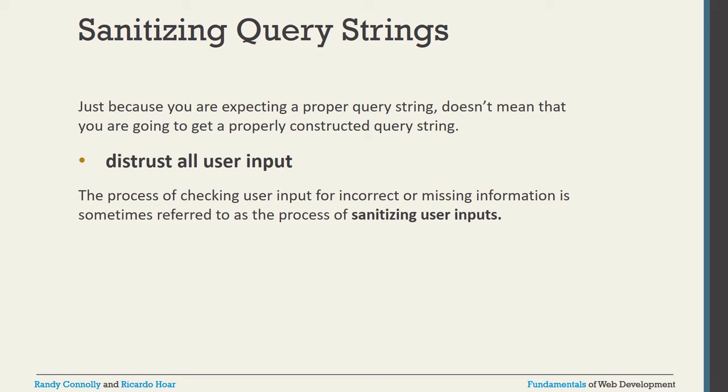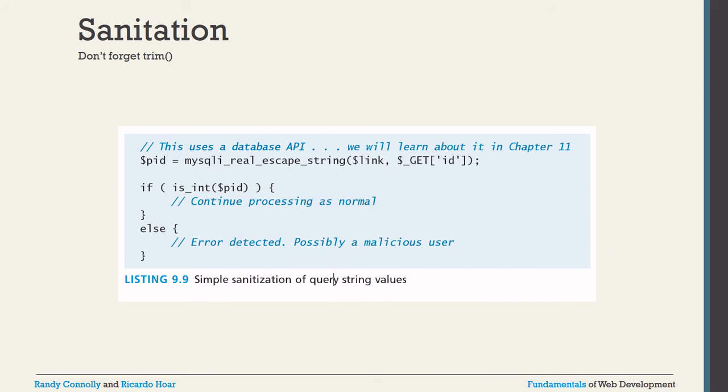Sometimes you need to validate user input for incorrect or missing information — this is called sanitizing user input. An important function is mysqli_real_escape_string($link, $value), which handles special characters from user input safely. $link is the database connection variable, which will be covered in the next video. Similarly, intval() processes a value as an integer; if it fails, an error can be displayed to prevent attacks or injection problems.